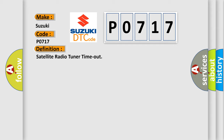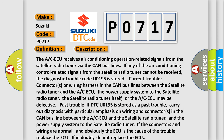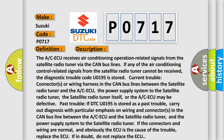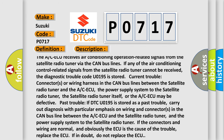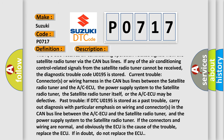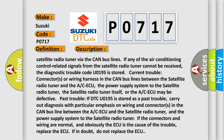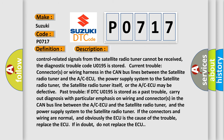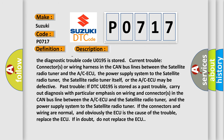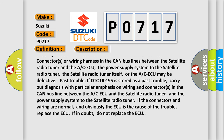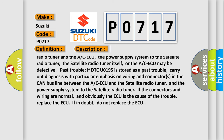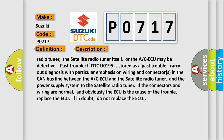Here is a short description of this DTC code. The ACAQ receives air conditioning operation-related signals from the satellite radio tuner via the CAN bus lines. If any of the air conditioning control-related signals from the satellite radio tuner cannot be received, the diagnostic trouble code U0195 is stored. Possible causes include trouble with connectors or wiring harness in the CAN bus lines between the satellite radio tuner and the ACAQ, the power supply system to the satellite radio tuner, or the ACAQ itself may be defective.